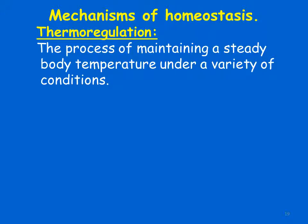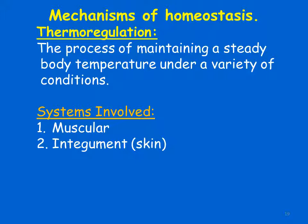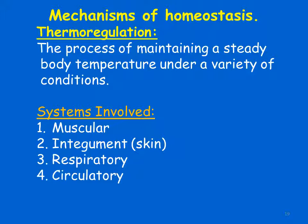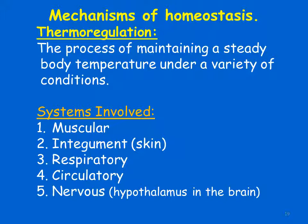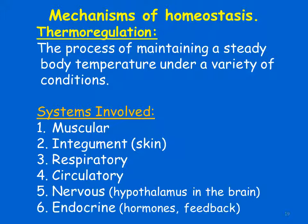Another example is thermoregulation — the process of maintaining steady body temperature under a variety of conditions. Many systems are involved: the muscular system, integumentary system (skin), respiratory system, cardiovascular system, nervous system (particularly the hypothalamus in the brain where the centres are located), and the endocrine system through which hormones and the feedback system work.